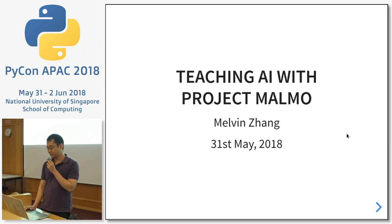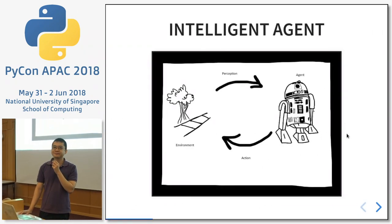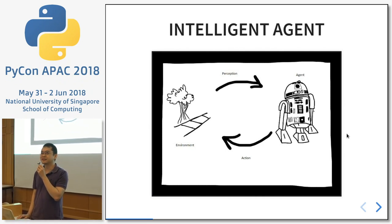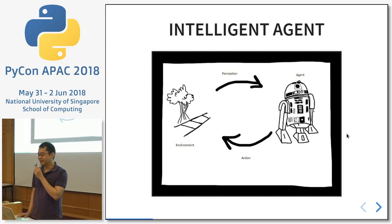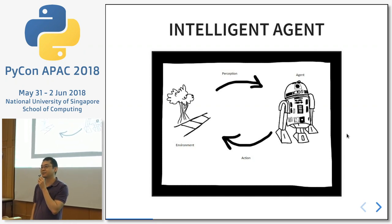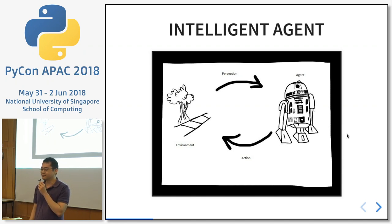I'll use a particular project called Project Malmo. I think the grand challenge in AI is to build something like an R2D2 or a C3PO. Just now Ben said he was the Jedi master, so the analogy is quite good — we do want advanced robotics where we can talk to them, they can do things in the world, operate computers, operate fighter planes, and things like that.